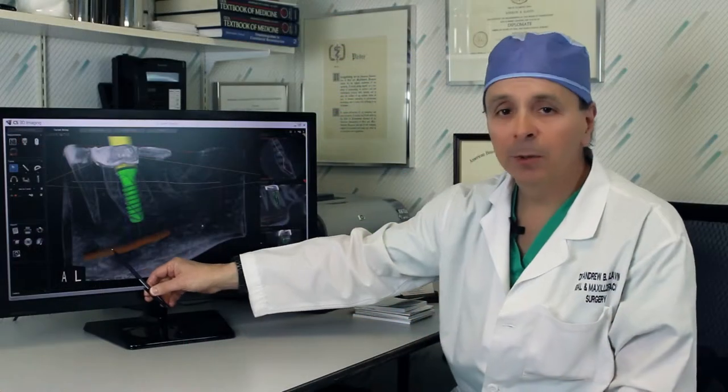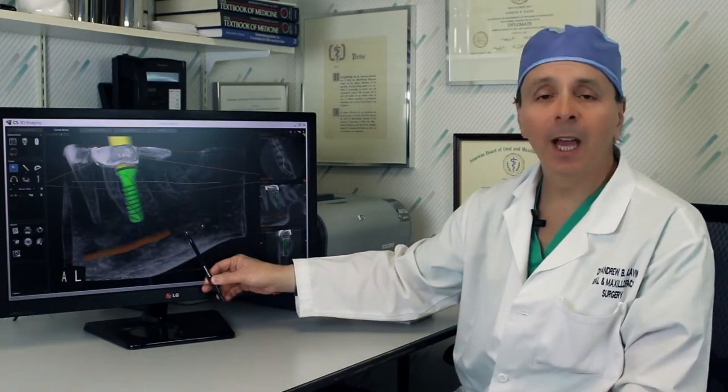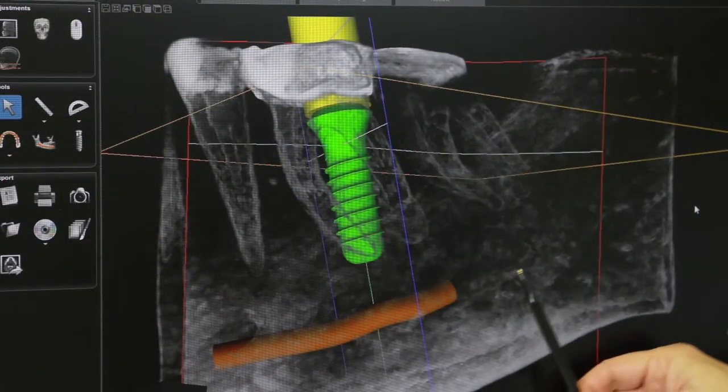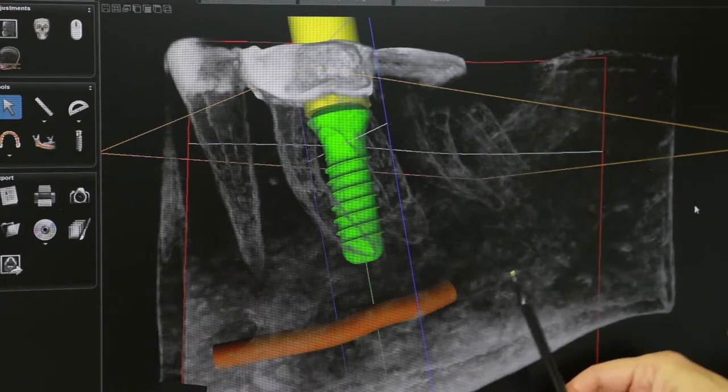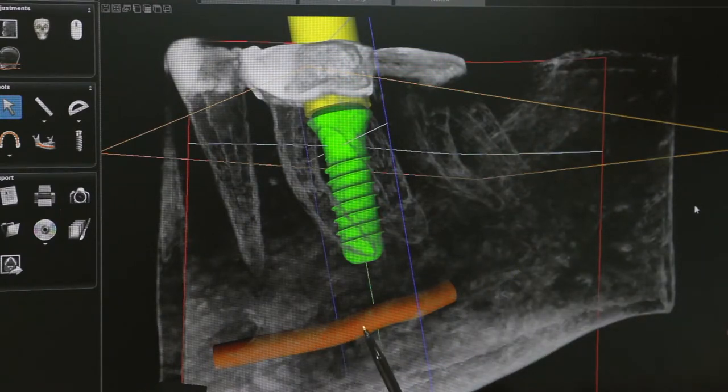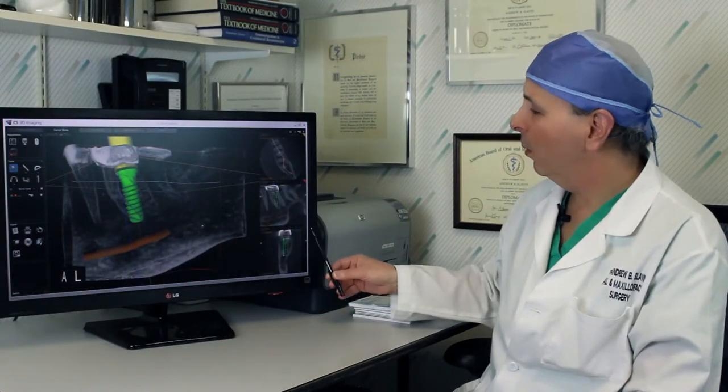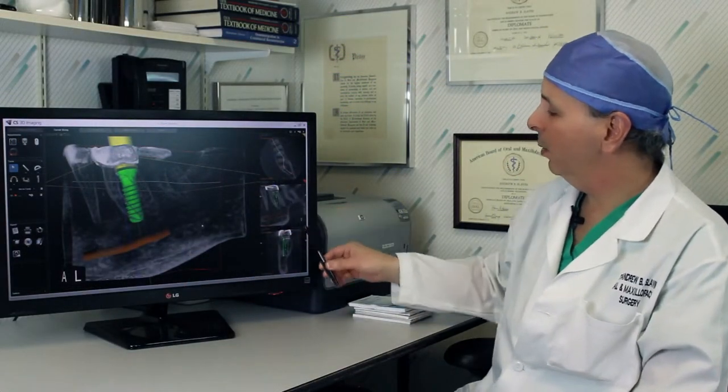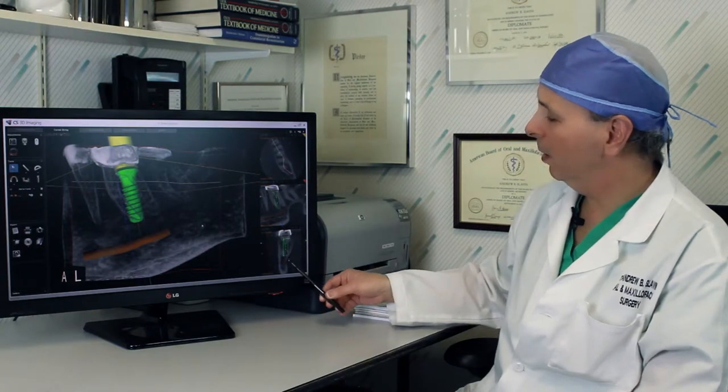The nerve which runs through the jaw bone, that's actually numbed when you have a shot of Novocaine that makes your lip numb, is a critical structure. The implant has to be shorter than this to avoid damage to that nerve. We can see this implant in three dimensions, as we can the tooth and the nerve.